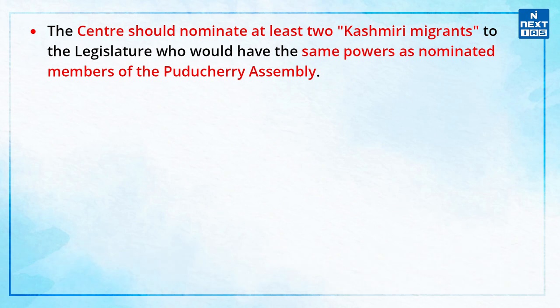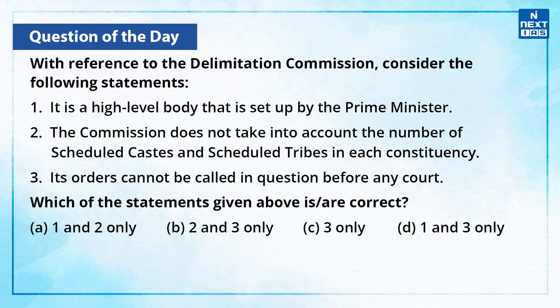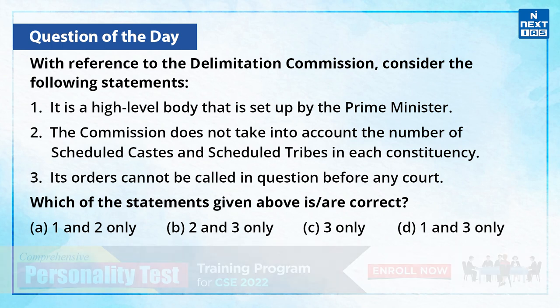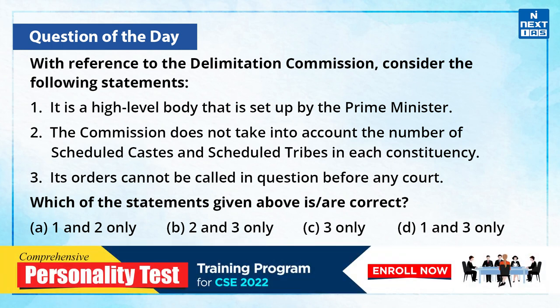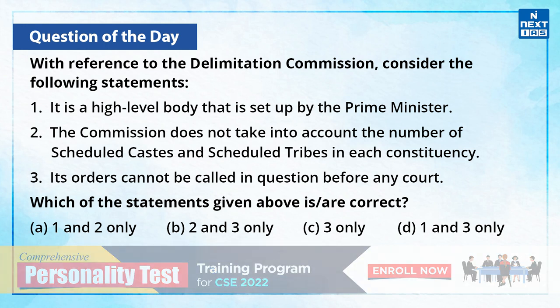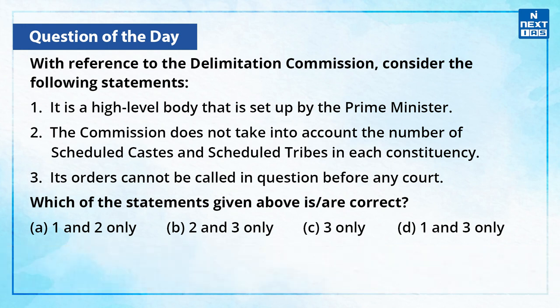Now, that was a little bit about the topic. Let's take a practice question. With reference to the delimitation commission, consider the following statements. Statement 1: It is a high-level body that is set up by the Prime Minister. Statement 2: The commission does not take into account the number of scheduled castes and scheduled tribes in each constituency. Statement 3: Its orders cannot be called in question before any court. Which of the above given statements is or are correct? You may take a moment and give your answer in the comment section below.